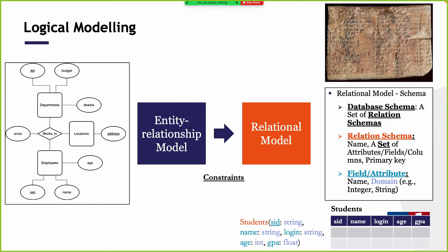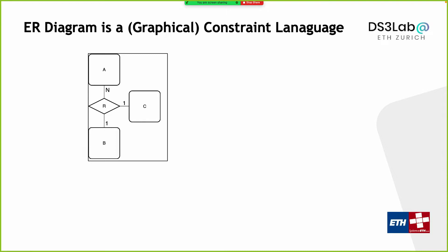If you think about what a conceptual model is — what an entity relationship diagram is — it's actually a language for you to specify constraints. This diagram might look a bit vague, but it actually defines a very precise collection of constraints you have on your data. So let's look at this diagram. You have three different entity sets A, B, and C, and you have one relationship R.